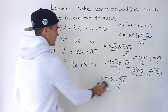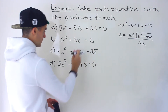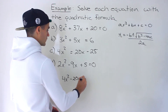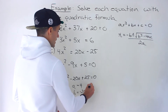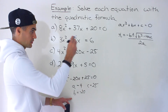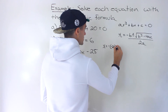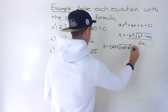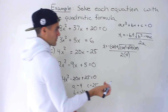Now part C. Same thing — let's bring everything to one side. We have 4x squared, and I'm going to bring the 20x over, so that becomes negative 20x, and then we have positive 25 equaling zero. So in this case, a is 4, b is negative 20, and c is positive 25. Taking these and plugging into the formula: x equals negative of negative 20, plus or minus the square root of negative 20 squared minus 4 times 4 times 25, all over 2 times 4.